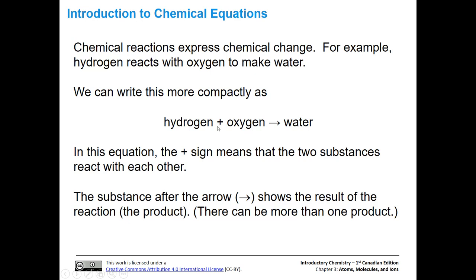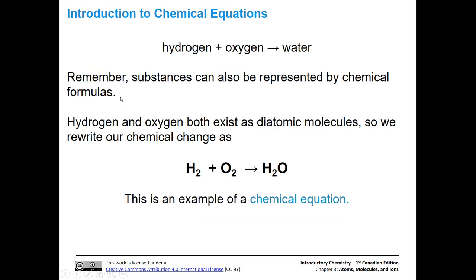The plus means that these two are reacting together, and the arrow means that this is the product that is produced. There can be more than one product in a chemical reaction, but in this case there's only one. Let's look at how we can write this using chemical formulas. Hydrogen and oxygen are both diatomic molecules, so this is how they exist naturally in their elemental form. So H2 plus O2 gives us H2O, which is the chemical formula for water. This is an example of a chemical equation.